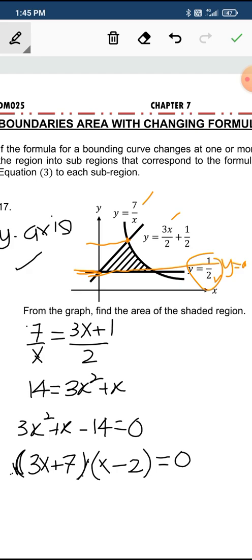We reject this value. x only equals 2 because x is greater than 0. All these values of x are greater than 0. So when x is 2, your y will be 7 over 2.